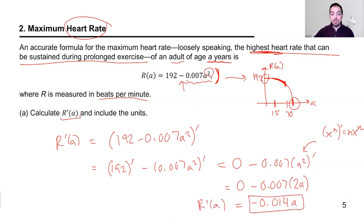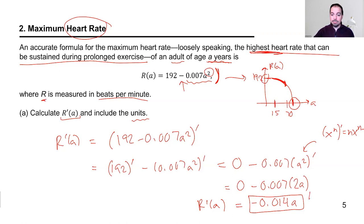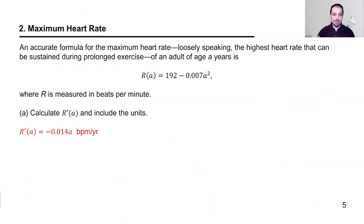The units of R prime of A come from Leibniz notation: the units of the output R (beats per minute) divided by the units of the independent variable A (years). So the units are beats per minute per year.